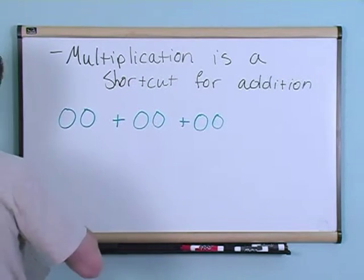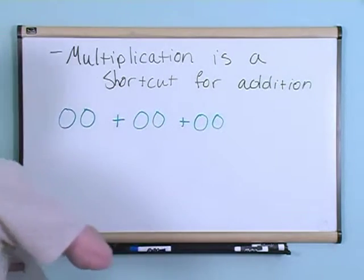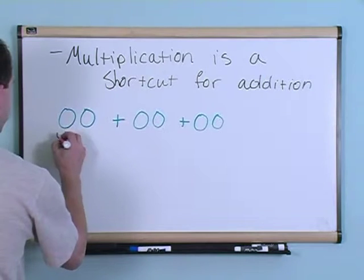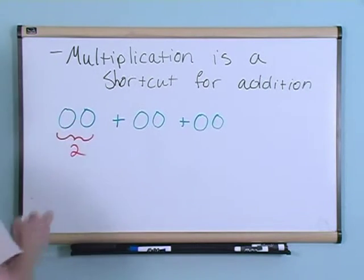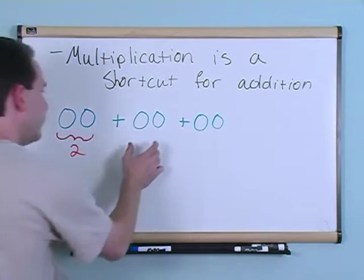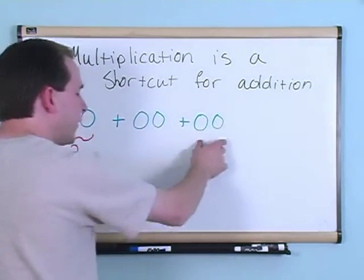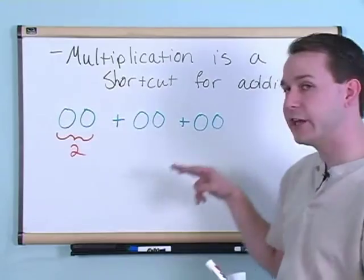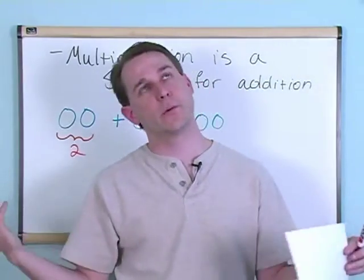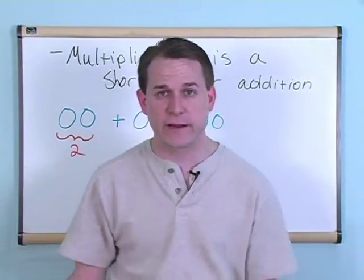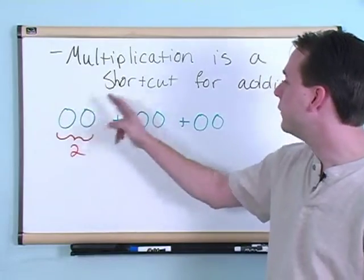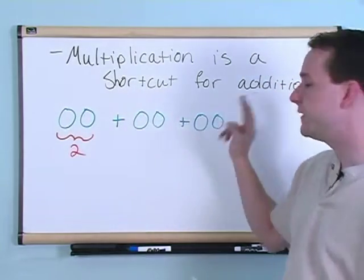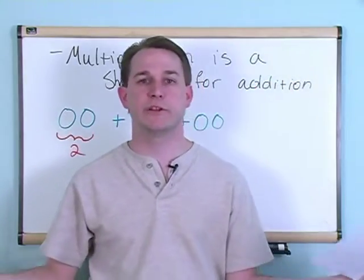You already know how to add this stuff up because what you have here is you have two balls here. And you have two balls here and you have two balls here. So if I were just going to ask you, how would you add these together? What would be the answer? Well, then you would say, well, that's simple. That's just six, right? Because you just count one, two, three, four, five, six. And you can do that. No problem. And you got the answer.